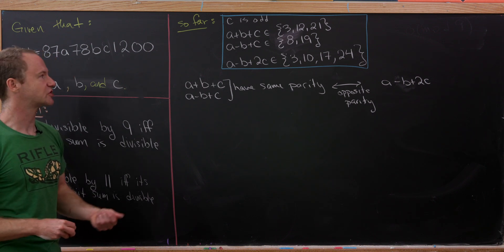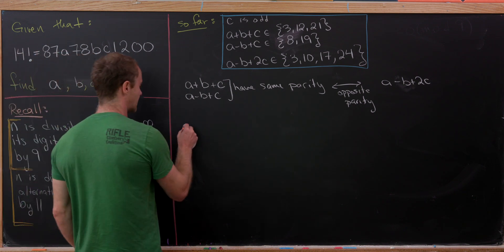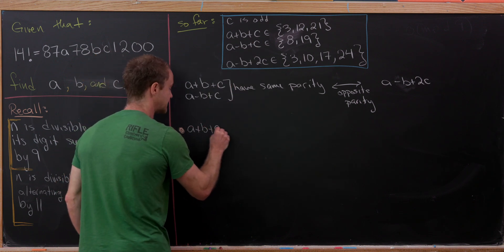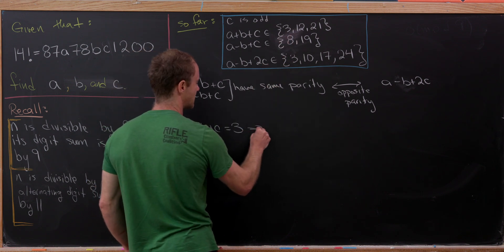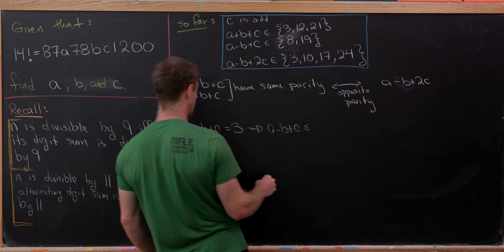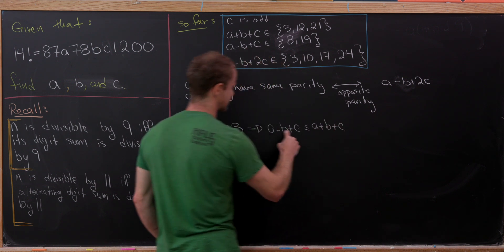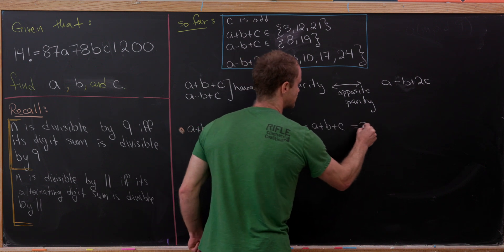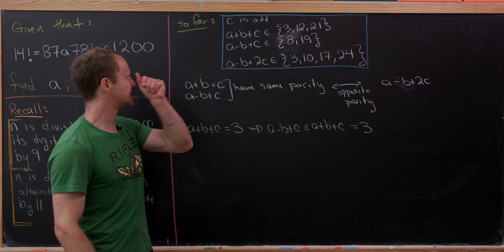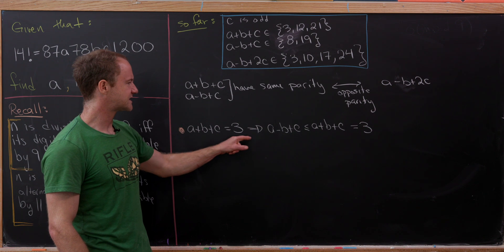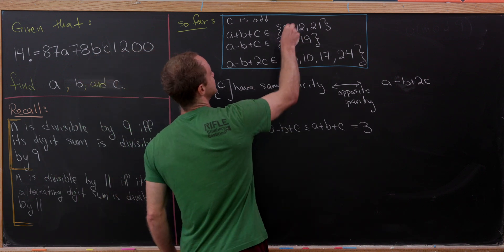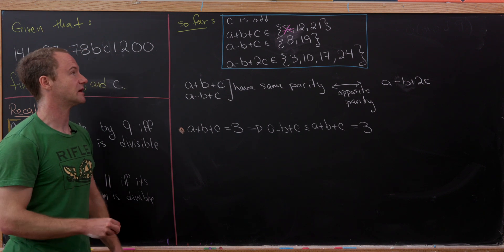Let's do a case-by-case argument. Start with A + B + C = 3. But notice A − B + C ≤ A + B + C = 3. By our parity argument, A − B + C must equal 19 — but simultaneously it must be ≤ 3. That's impossible, so A + B + C = 3 is eliminated.